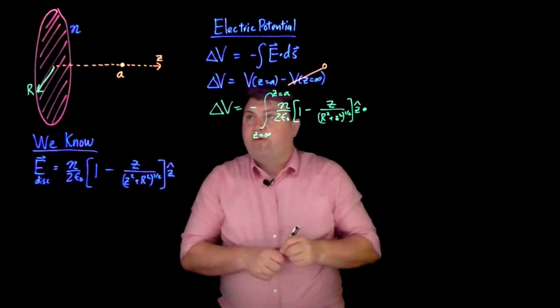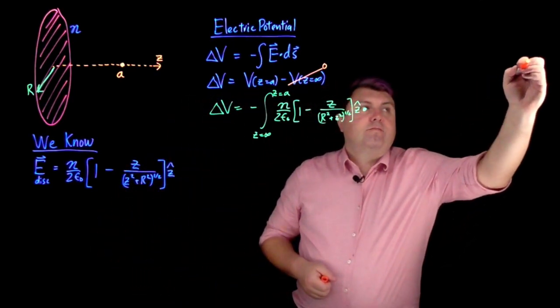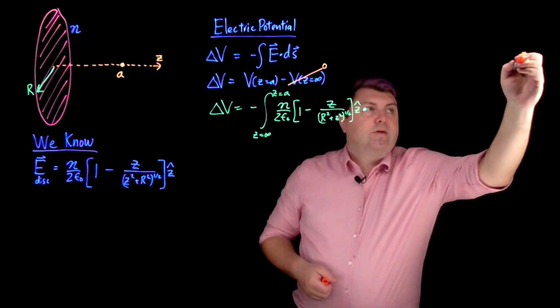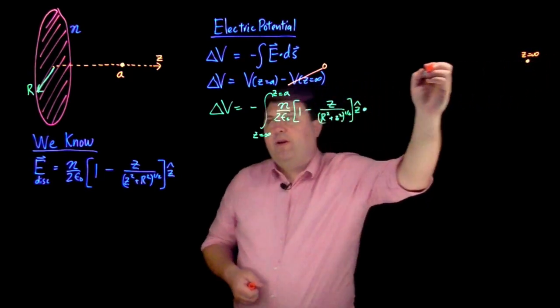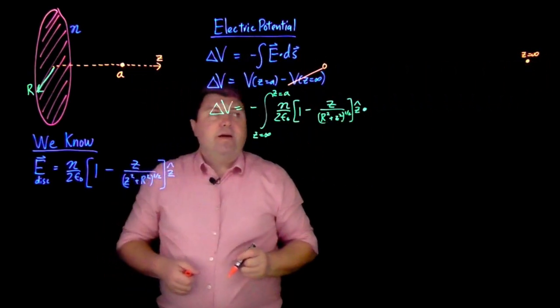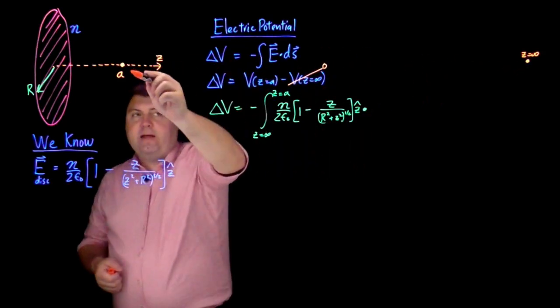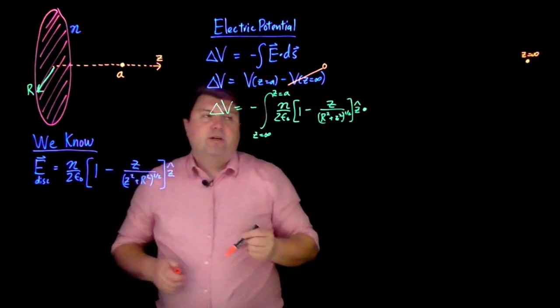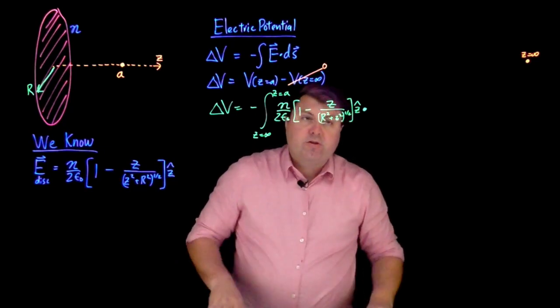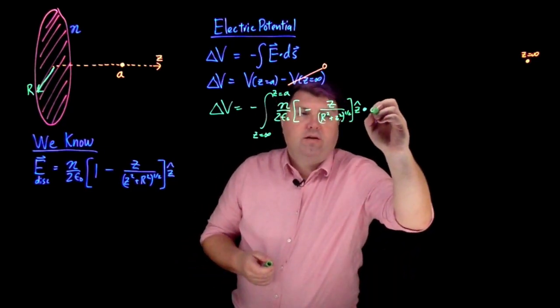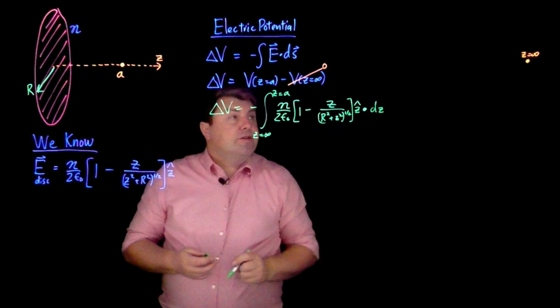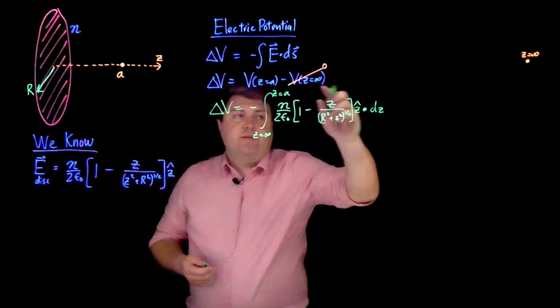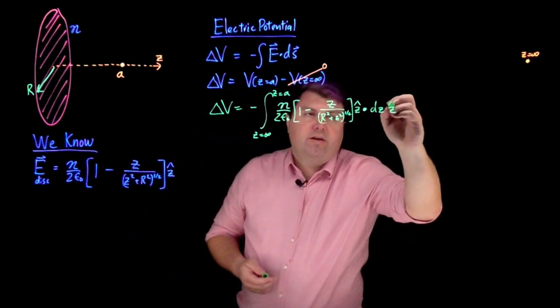So as I'm going from z equals infinity to a, this is my path integral. What am I changing? I am changing z, so I would have this be dz. And the direction I'm moving is along the z axis, so z hat.